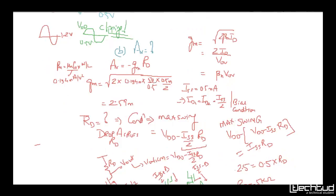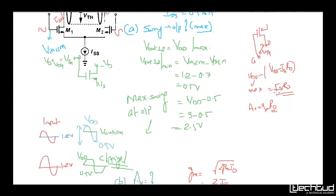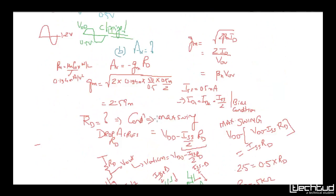Now we need RD. We already established that the swing is ISS×RD and the swing is 2.5V. So: ISS × RD = 2.5V, that is 0.5mA × RD = 2.5V, giving RD = 5kΩ. The virtual ground is at the tail node; when one input increases its AC voltage, the other decreases, so ISS/2 + ΔI flows in one branch and ISS/2 − ΔI flows in the other.